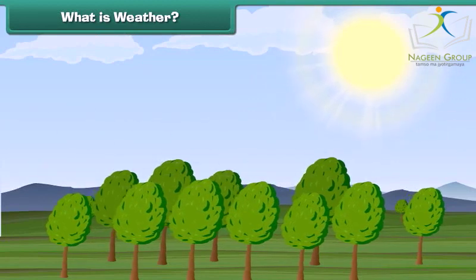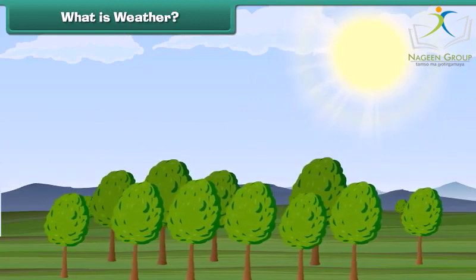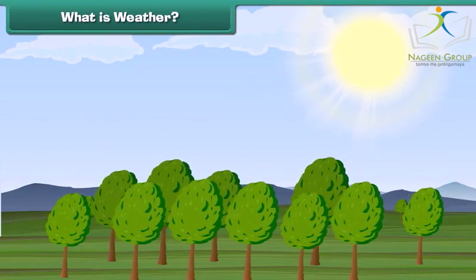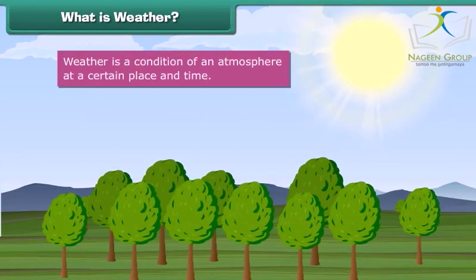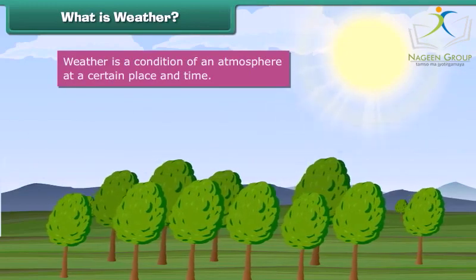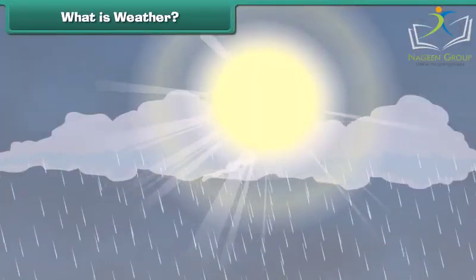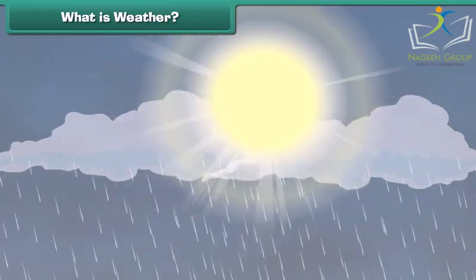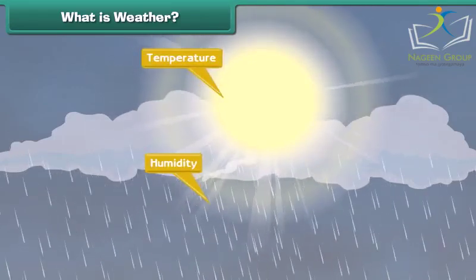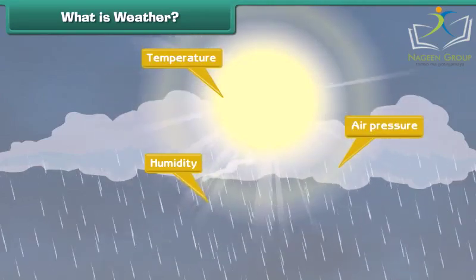Did you check today's weather forecast? What is weather? Weather is a condition of the atmosphere at a certain place and time. The weather depends on many factors such as temperature, humidity, and air pressure. Let us learn about these factors.